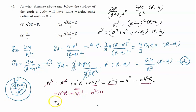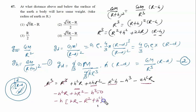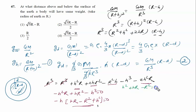Simplifying further: the 2hR squared and minus hR squared terms combine to give plus hR squared. So we have hR squared minus h cubed equal to zero. Taking minus h common: minus h times (h squared plus hR minus hR minus R squared) equals zero, which gives the quadratic h squared plus hR minus R squared equal to zero.